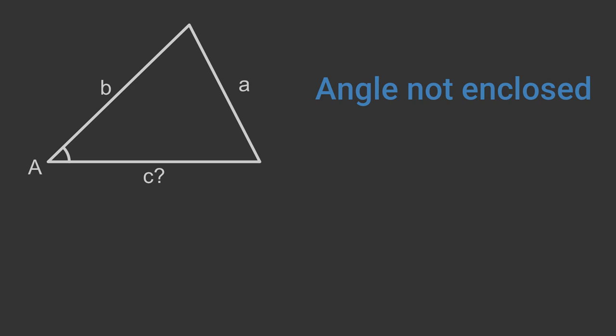The problem here is that geometrically there are two possible solutions. This triangle has angle A and two sides a and b, but this triangle also has angle A and two sides a and b. There are two ways to place side a to make the triangle, so there are two possible values for side c. We need more information to know which one is correct.